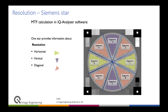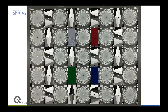A nice thing about the Siemens star is that we can measure in all orientations. We have eight segments: segments one and five, three and seven measure horizontal and vertical, while two, four, six and eight measure diagonally. Many properties of lenses depend on orientation, and with the Siemens star we measure all of them at once.